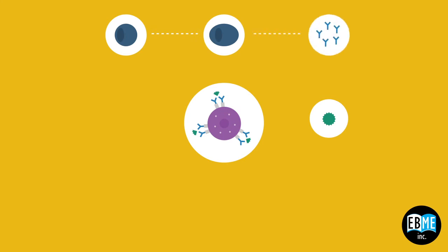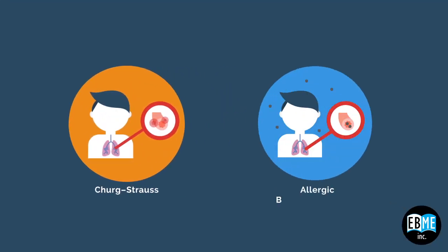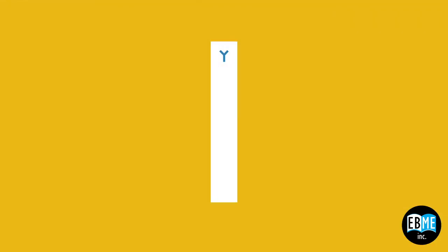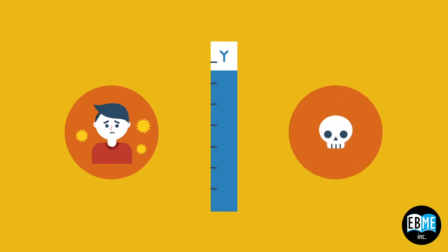Sometimes this process can get out of hand in processes such as Churg-Strauss, allergic bronchopulmonary aspergillosis, and other things that will drive even further IgE. IgE levels have been fundamentally linked with increased chance of developing asthma and increased chance of death from asthma exacerbation.